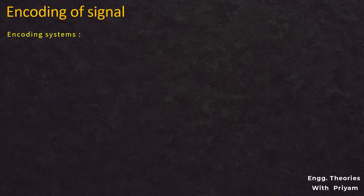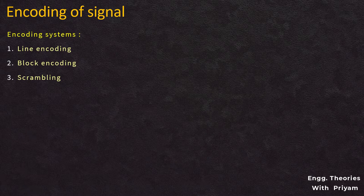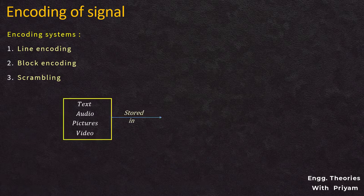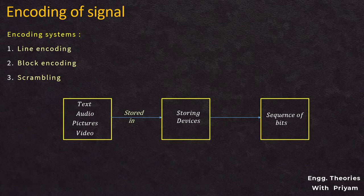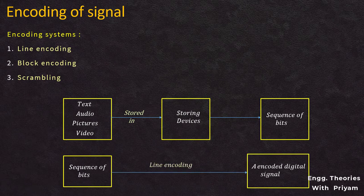Encoding systems are used to encode the data bits into an encoded signal. The encoding systems used in baseband transmission can be divided into line encoding, block encoding, and scrambling. Line encoding is always needed, but block encoding and scrambling may not be needed. Data can be in the form of text, audio, graphical images, or video, stored in a device as a sequence of bits. This sequence of bits is converted into an encoded signal using a line encoding system.